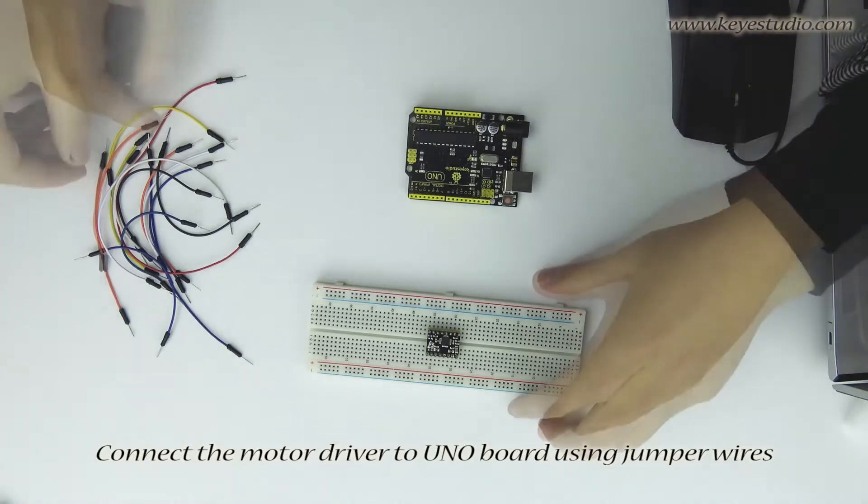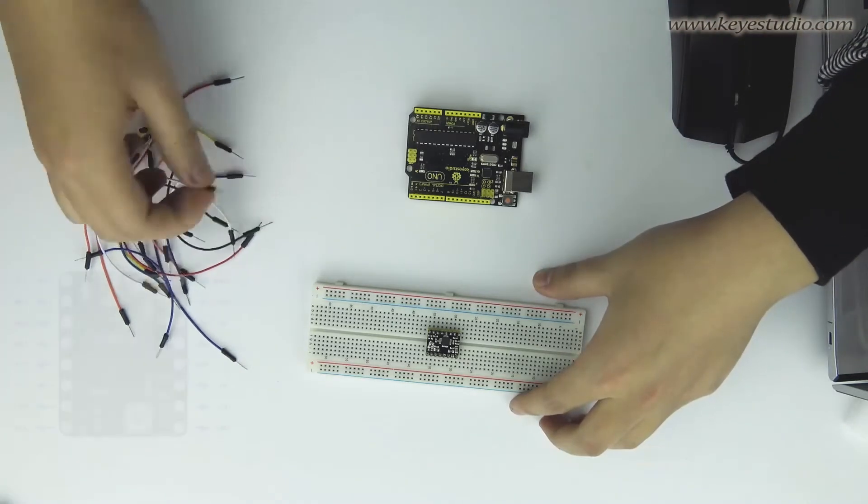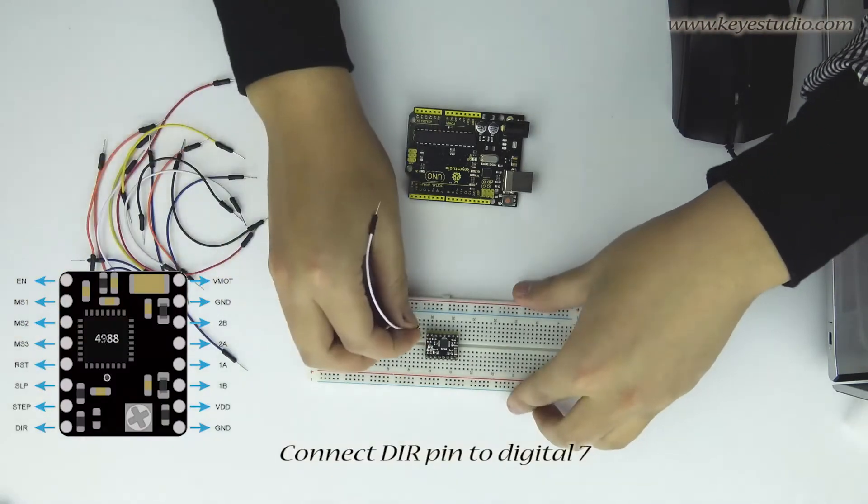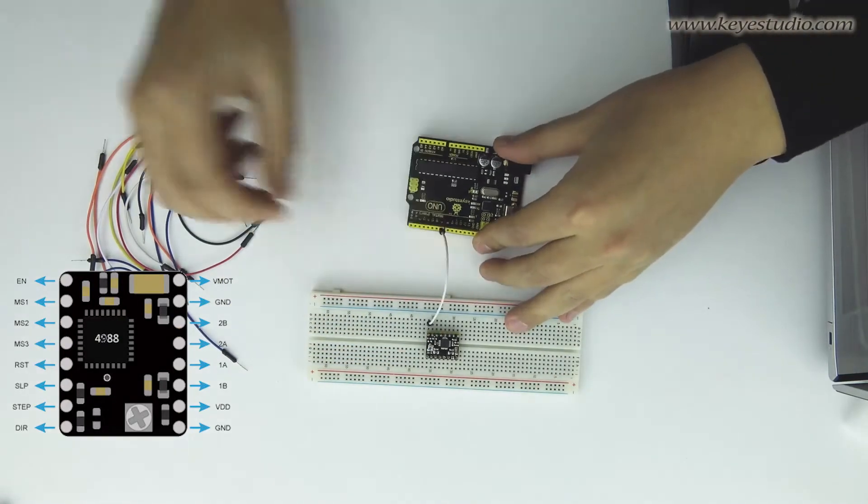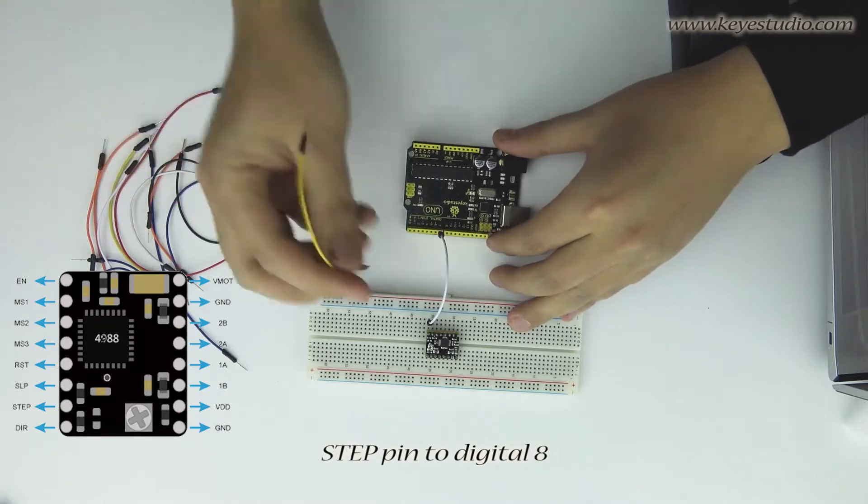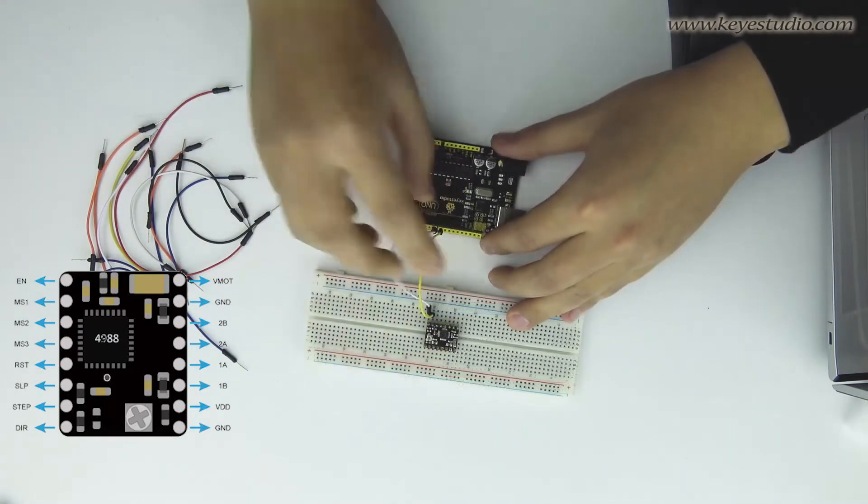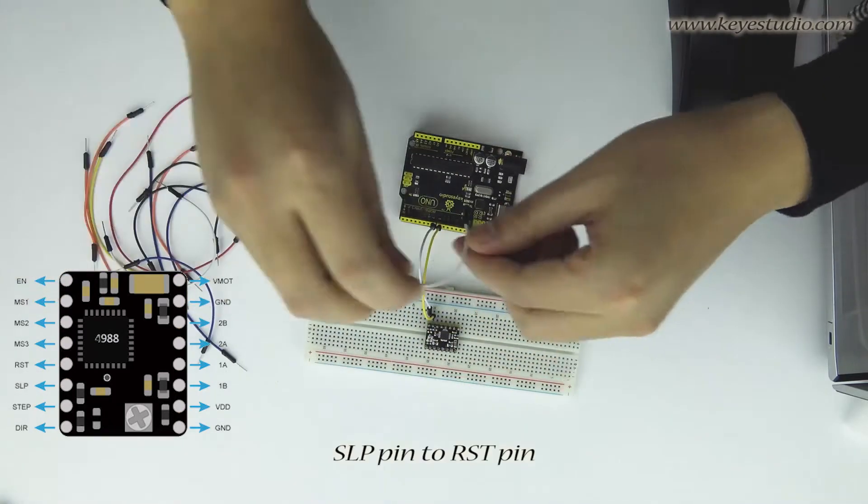Connect the motor driver to UNO board using jumper wires. Connect the DIR pin to digital 7, STEP pin to digital 8, SCL pin to reset pin.